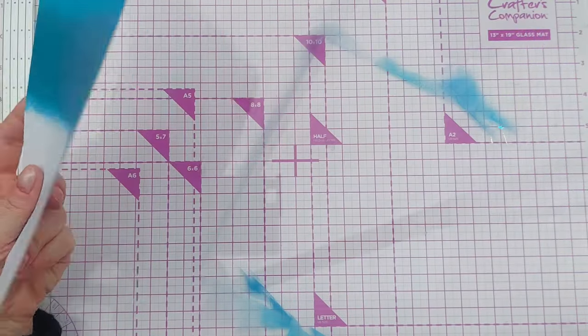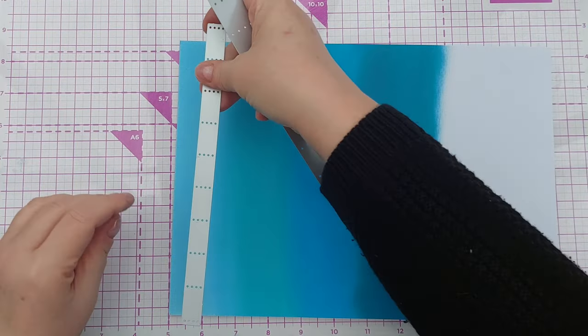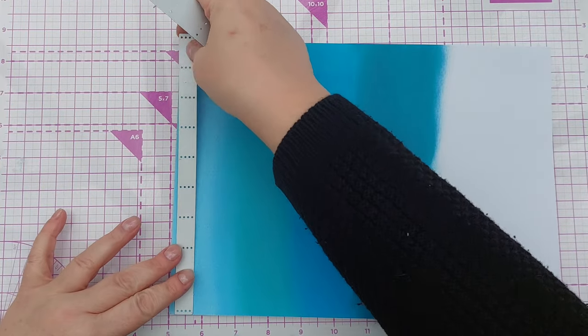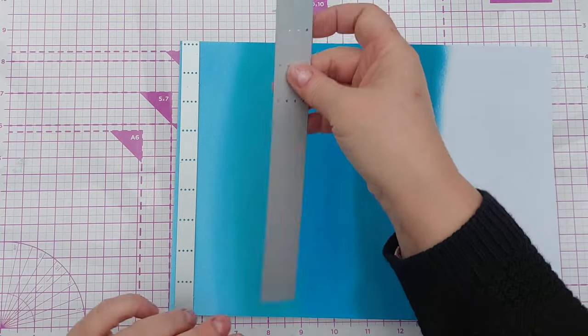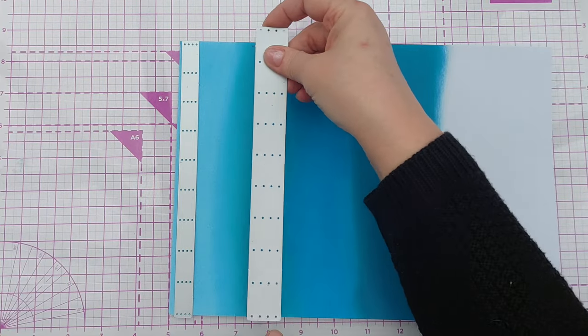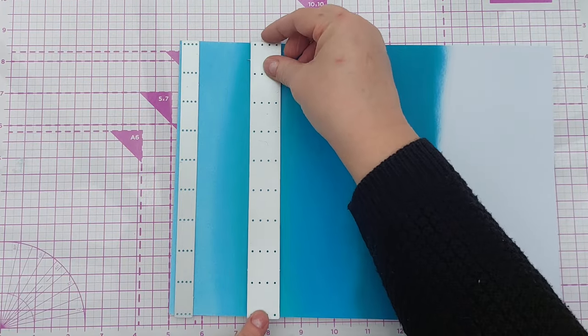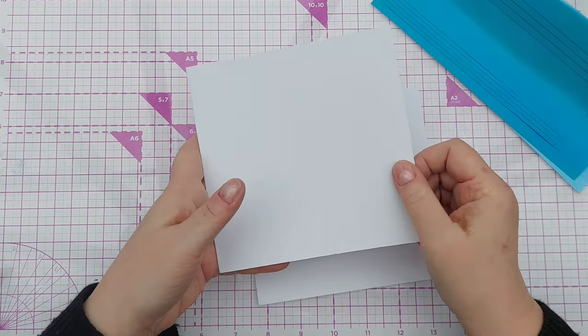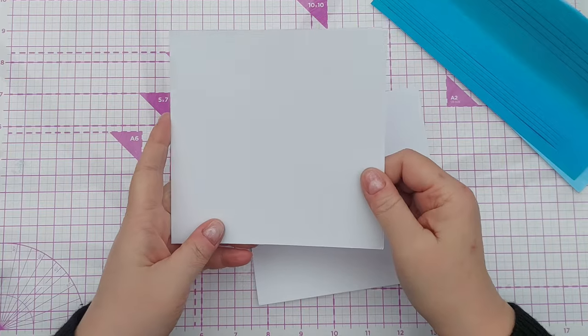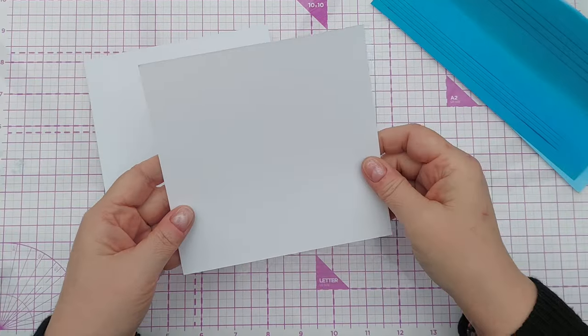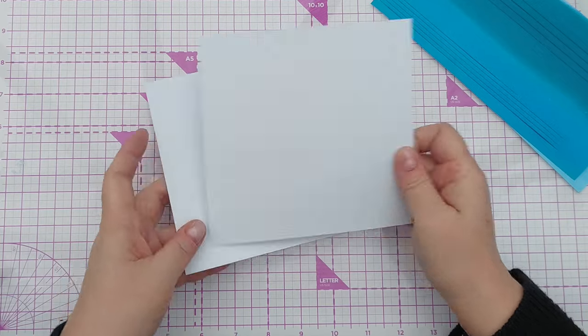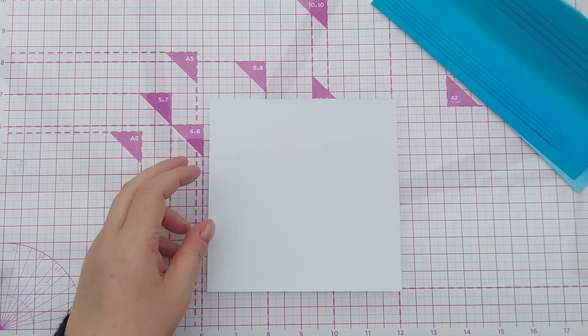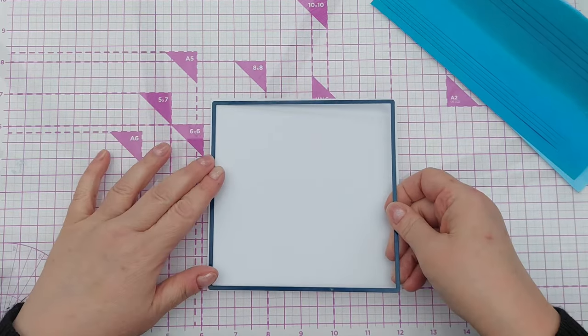Now I'm going to cut some strips. I don't particularly want the blended part for this, so I'm just going to take from the solid color. My card blank is five and three-quarter by five and three-quarter smooth white cardstock, and I've chopped another one in half to create a panel.